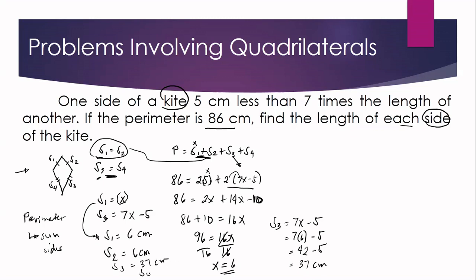To check: 6 plus 6 is 12, and 37 plus 37 is 74. Adding 12 plus 74 equals 86, which matches the given perimeter of the kite. This confirms our answer is correct.